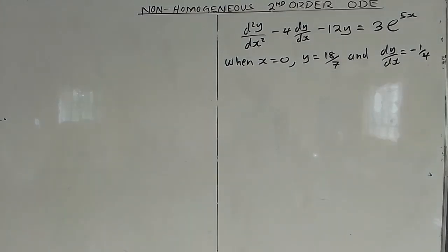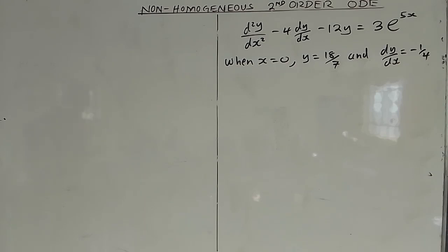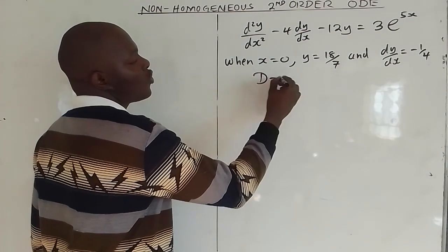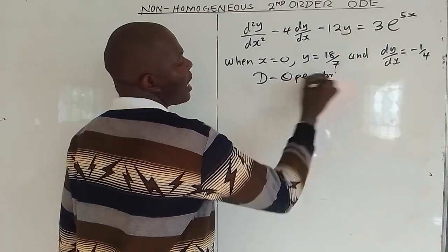In this second example on a non-homogeneous second order ordinary differential equation, we've been told to use the method of undetermined coefficients to solve the differential equation: d²y/dx² minus 4 dy/dx minus 12y equals 3e^(5x). We've been told to use the D-operator method.